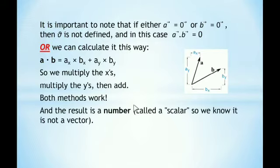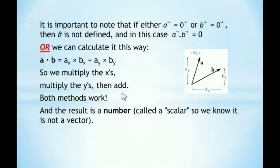Both methods work — you can use either method discussed above. The result is a number called a scalar. So we know it is not a vector. In this way, the product of the two vectors results in a scalar number — that's why this is called the scalar product.